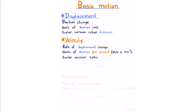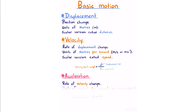However, with knowledge of direction we can recognize that overall my position hasn't changed since I'm back where I started, and therefore my displacement would be zero. Velocity is rate of displacement change; we measure it in units of meters per second, written as ms⁻¹. Our scalar version is called speed, and the equation is velocity equals displacement divided by the duration over which the displacement occurred.